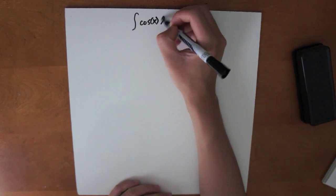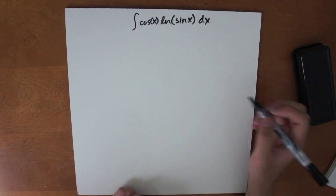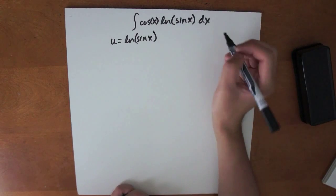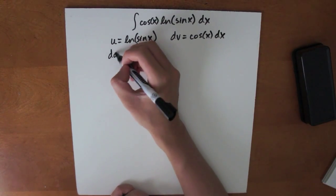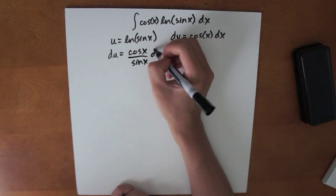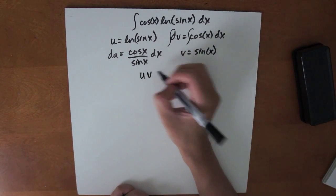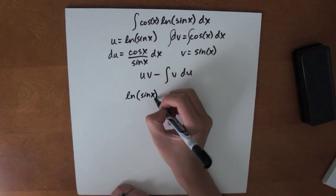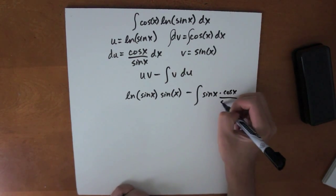Now let's try a harder example. Let's do the integral of cosine of x times ln of sine of x dx. Since logarithmic functions come before trigonometric functions in LIATE, we choose u equal to ln of sine of x. And our dv is just the remaining part of the integral, so dv is equal to cosine of x dx. We differentiate here — du is equal to cosine of x over sine of x dx. And we integrate here — v is equal to sine of x. Now we use the formula u times v minus the integral of v times du. So we get ln sin x times sin x minus the integral of sin x times cosine of x over sin of x dx.